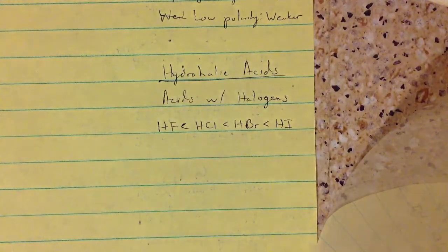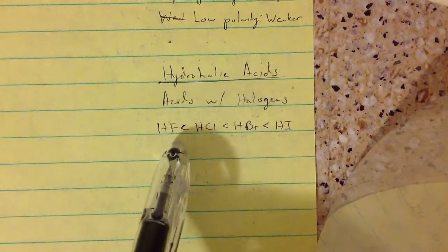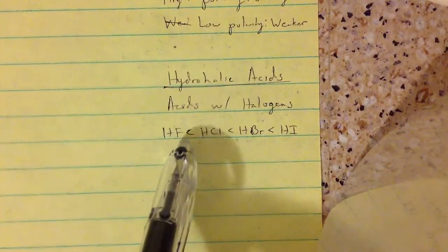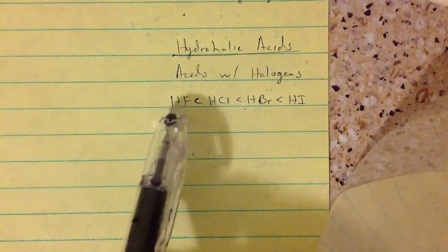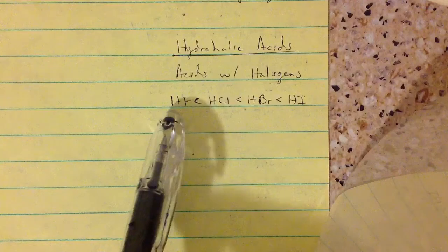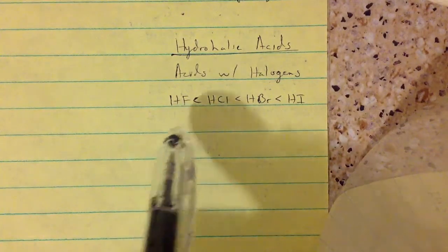So just to review, HF, since fluorine is very electronegative, it's going to have a really strong bond. And if you have a really strong bond, it's not going to want to break up into ions, meaning it's going to be the weakest acid.